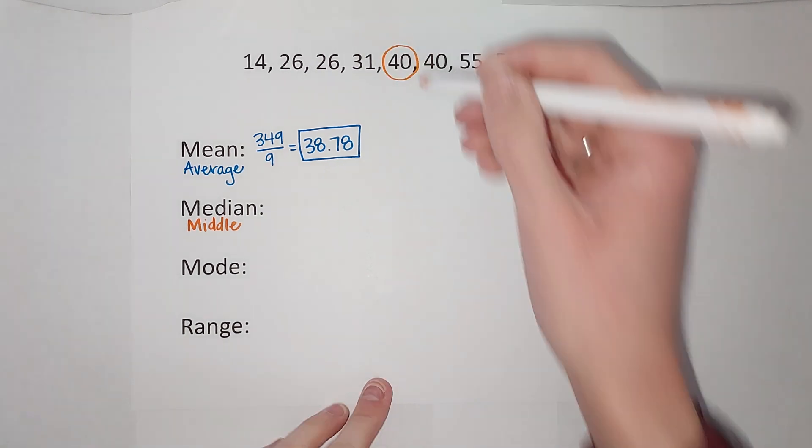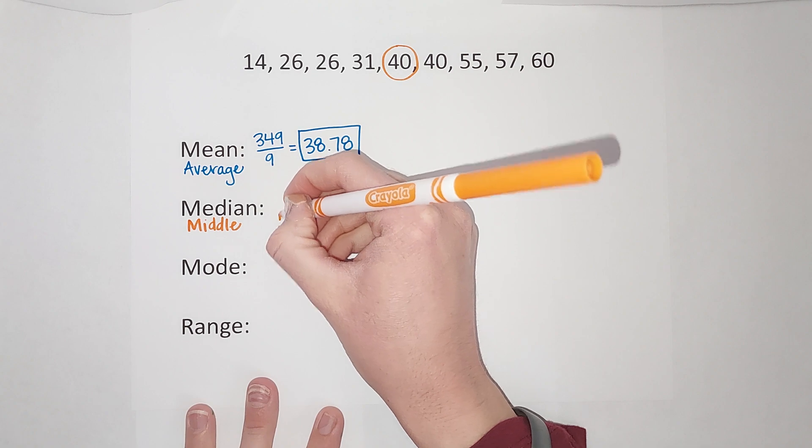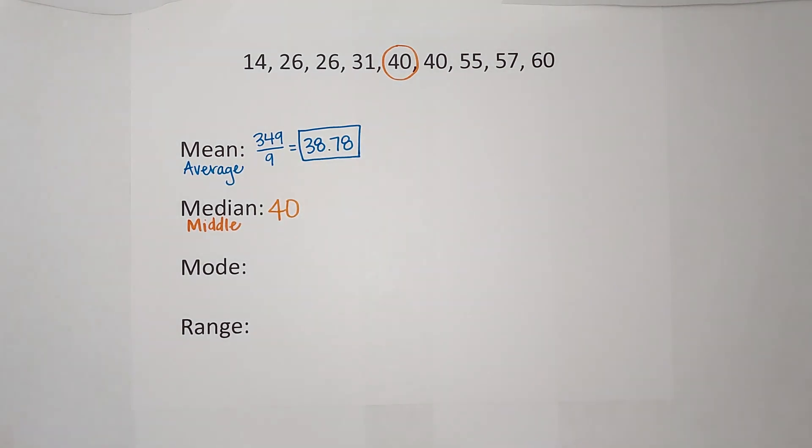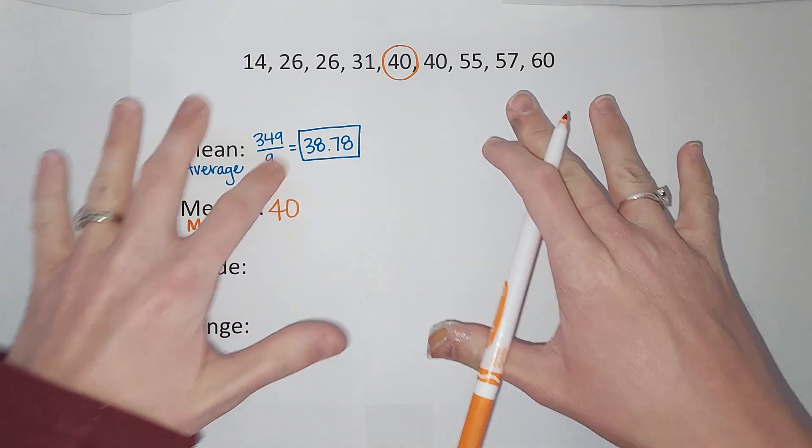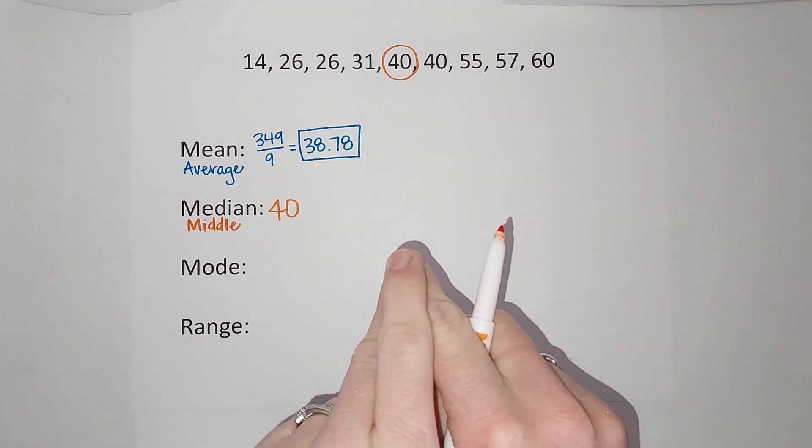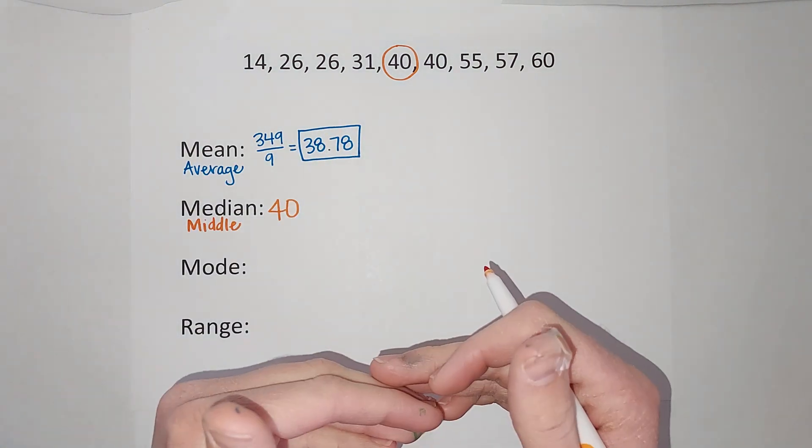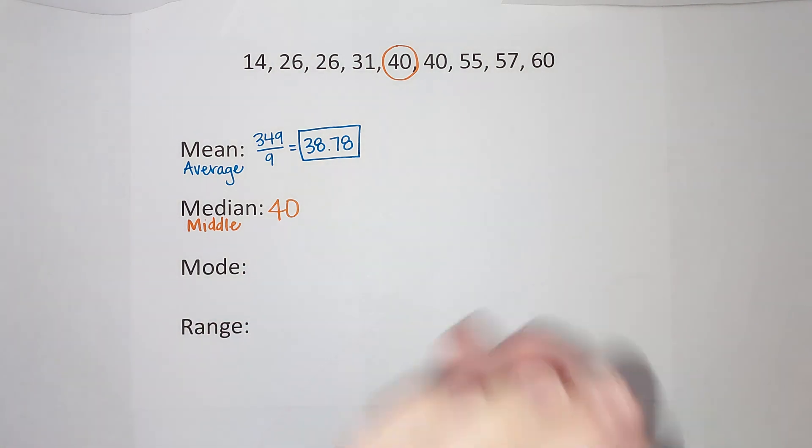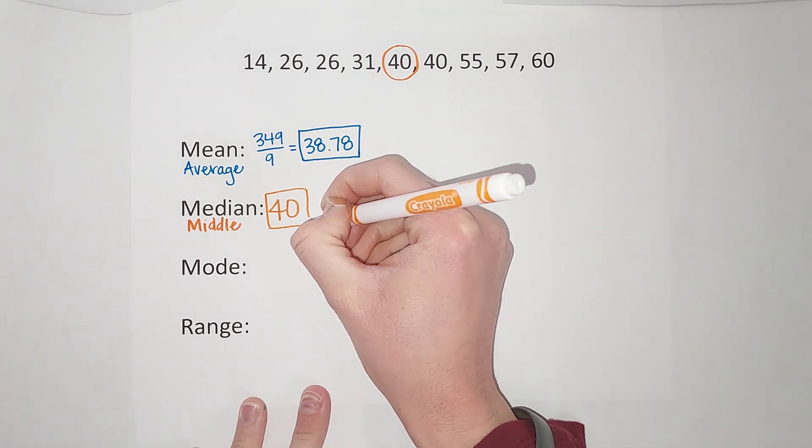This was, we have an odd amount of numbers, nine. If you have an even amount of numbers, you don't have a single number, you have two numbers that are your median. You add them and divide by two to get their average. I will link an example in the corner where I do one like that. But my median here is 40, that's it.